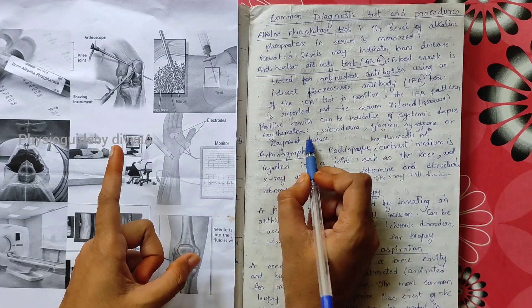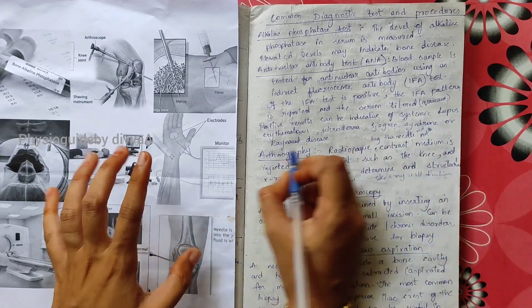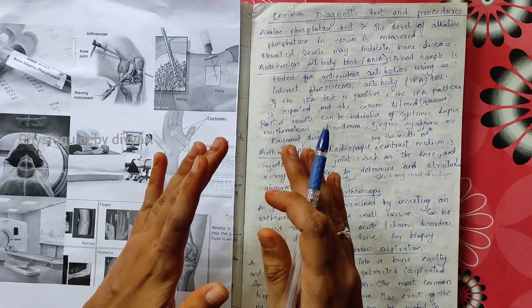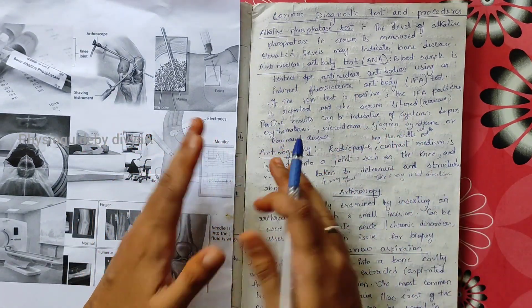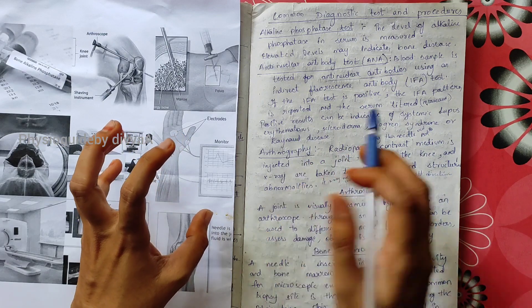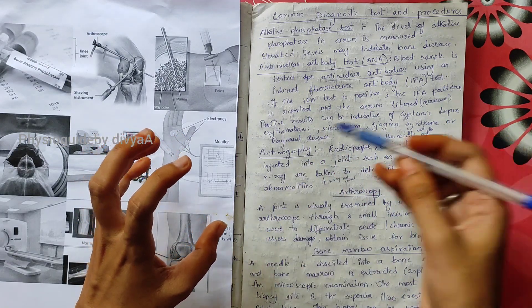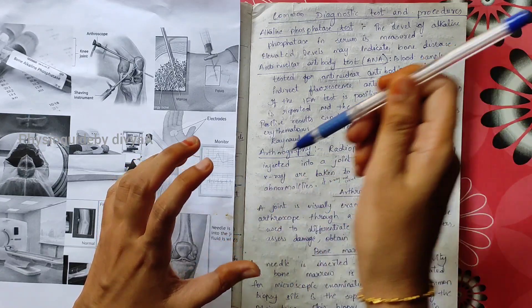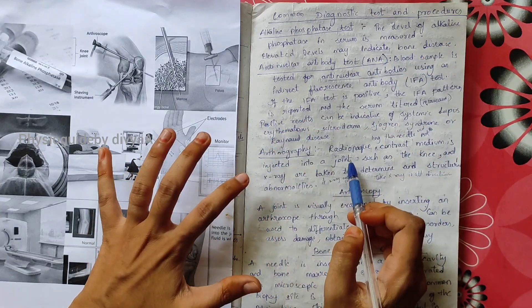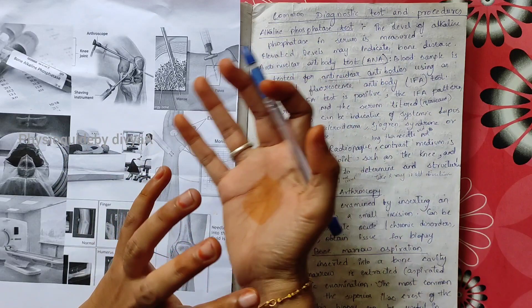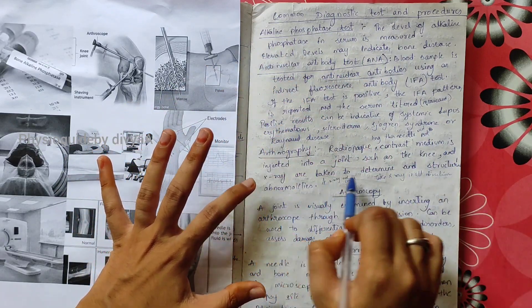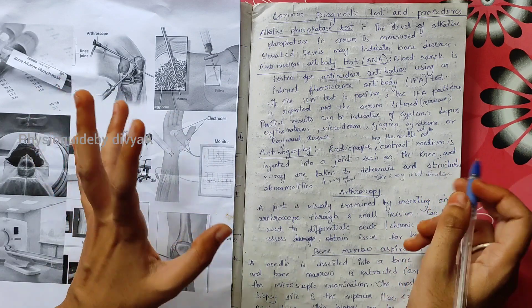Arthrography: if X-ray cannot show the area properly, a thin needle with contrast medium is injected into the joint and X-rays are taken in different directions, such as in the knee, to determine if there are any structural abnormalities.